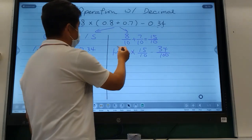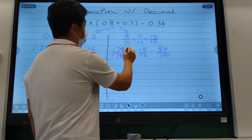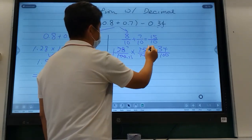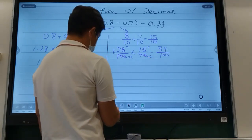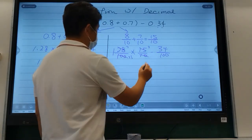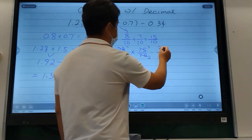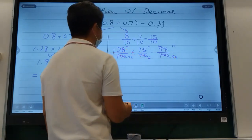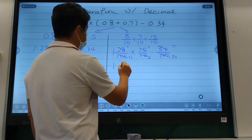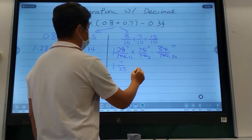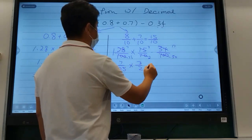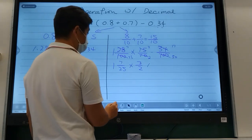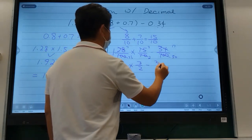The numbers look really big, so I want to see if I can reduce anything first. This one I could reduce using a 4, that would be 7 over 25. This one I could reduce using a 5, that would be 3 over 2. And this one I can use a 2, that would be 17 over 50.